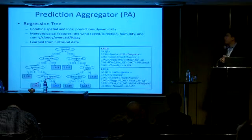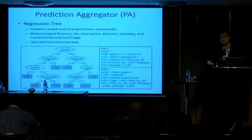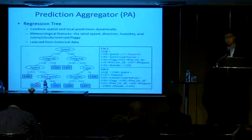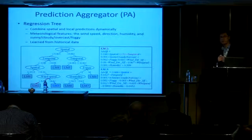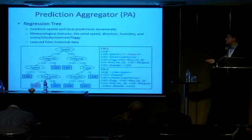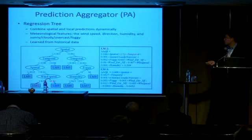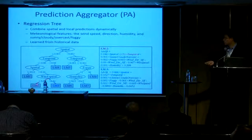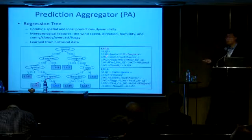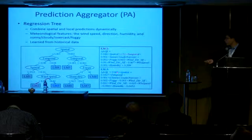Then we have an aggregator based on a regression tree. As I said, sometimes spatial information is more important, sometimes temporal information is more important. We learn this structure from data. Here's a real example learned from data: when wind speed is very low, we use a certain combination; when wind speed is high, we give spatial prediction a higher weight. This framework structure is learned from data.